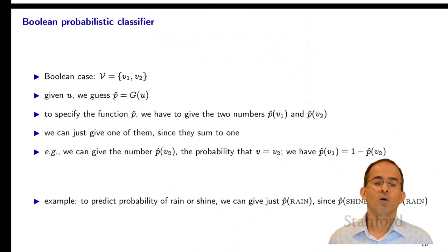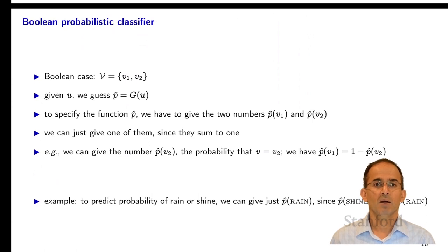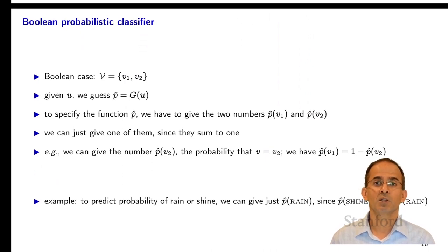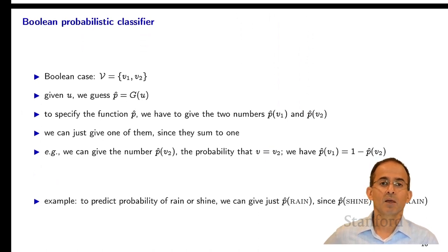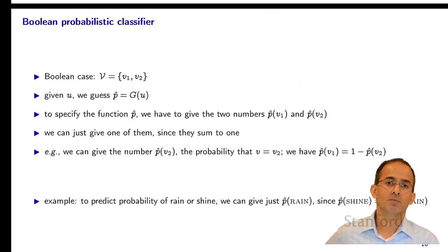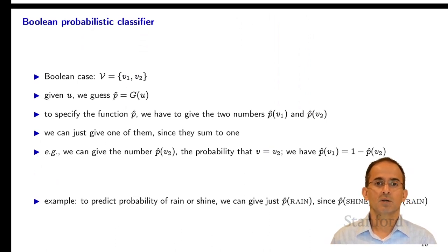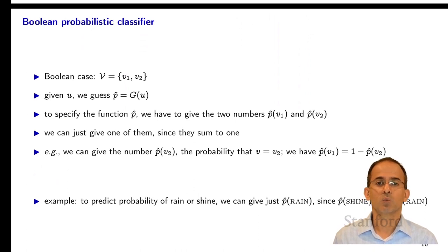We can do exactly the same for Boolean probabilistic classification, and there's a special wrinkle people use for Boolean classification. When you have a probability distribution over two quantities, you only need to specify it by one number rather than two, because the other must be 1 minus it. So if the target set is {v1, v2}, instead of giving both p-hat of v1 and p-hat of v2, we can just give p-hat of v2 — the probability that v is v2 — and define p-hat of v1 as 1 minus p-hat of v2.